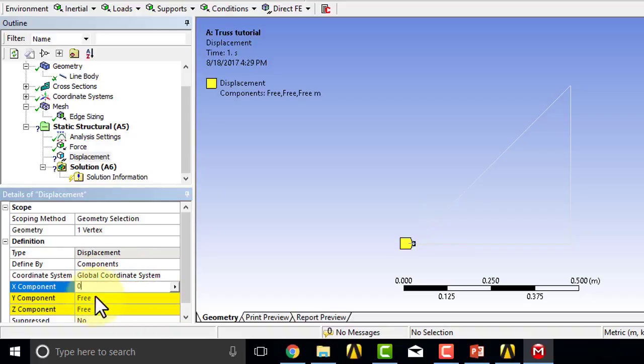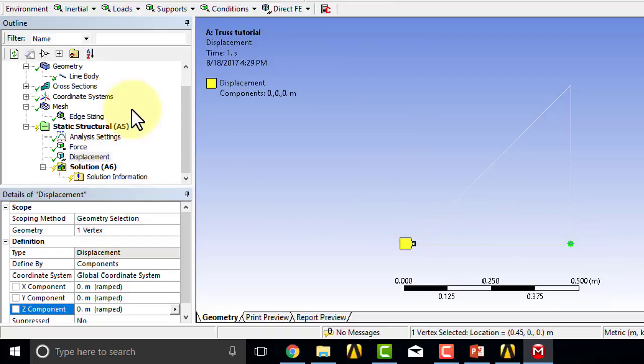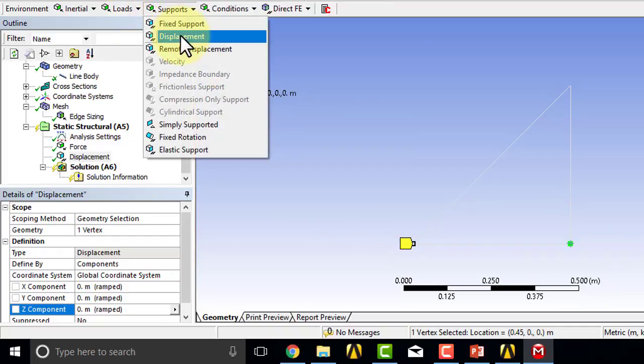It cannot move in X, Y, or Z, so all the displacements at that pin are known, or that vertex. Then let's put in the second displacement. I can also select the vertex and then say supports displacement.